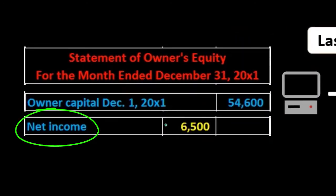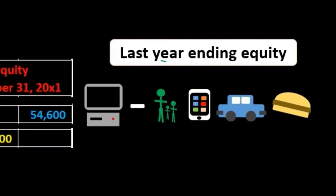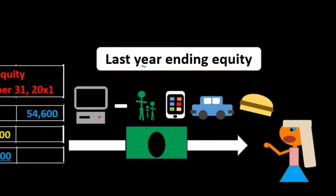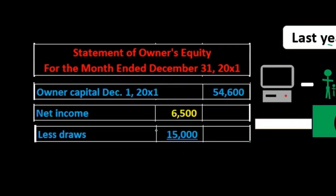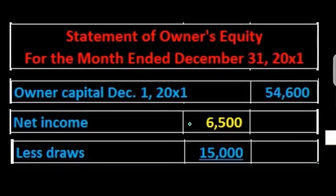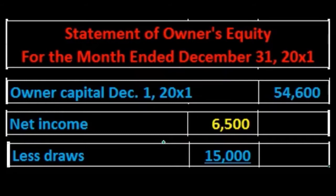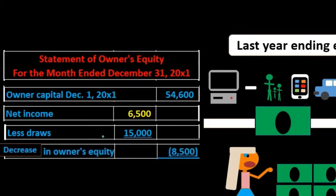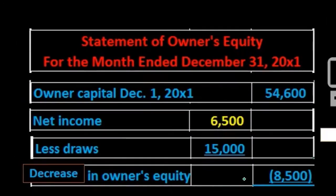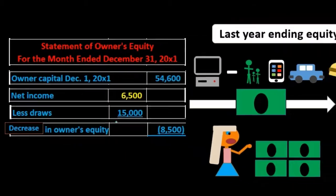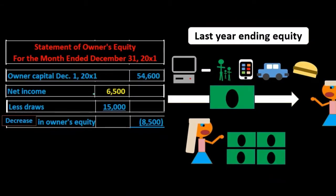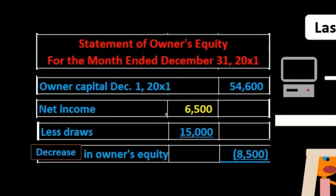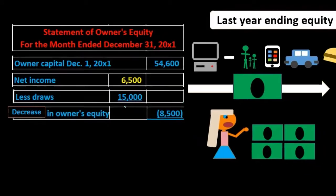We increase beginning equity by net income — the bottom-line number from the income statement — and then decrease it by draws. Note that in this case draws are actually much larger than net income. Net income is $6,500 and draws are $15,000, so net income minus draws actually results in a decrease in owner's equity: the owner drew out more than was earned in net income during this time period.